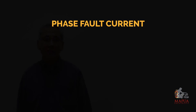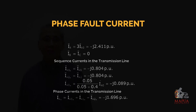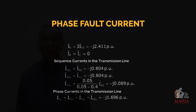Converting to phase currents, the phase fault currents are: IA = 3 × IA0 = -j2.411 per unit, whereas IB and IC are equal to zero.